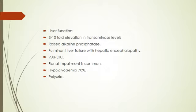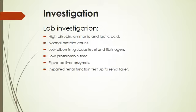Regarding liver function, there is a 3 to 10-fold elevation in transaminase levels with elevated alkaline phosphatase, fulminant liver failure, and hepatic encephalopathy. 90% of patients develop DIC — disseminated intravascular coagulopathy. Renal impairment is common. Hypoglycemia occurs in 70% of cases. Lab investigations show high bilirubin, high ammonia, high lactic acid.